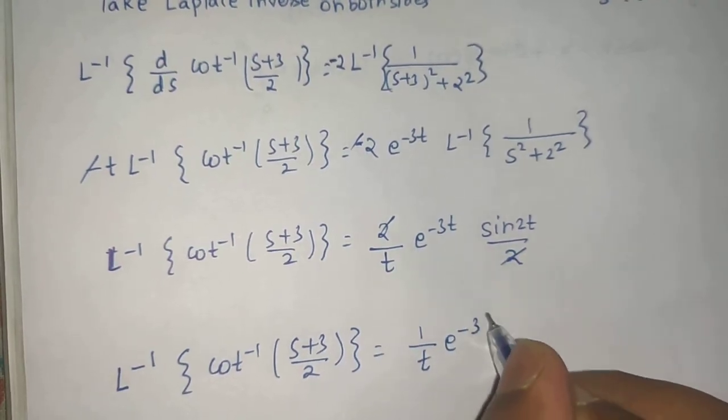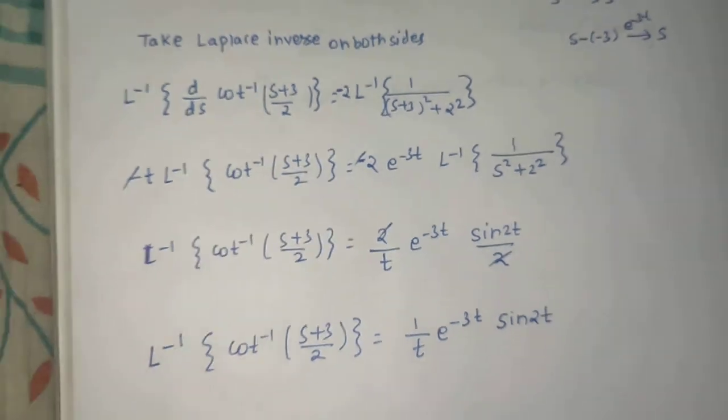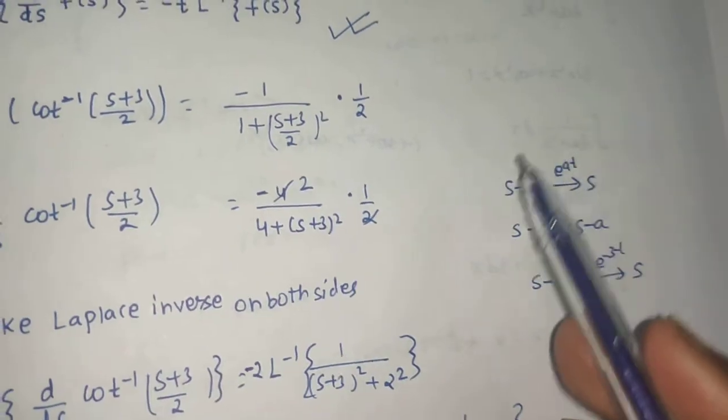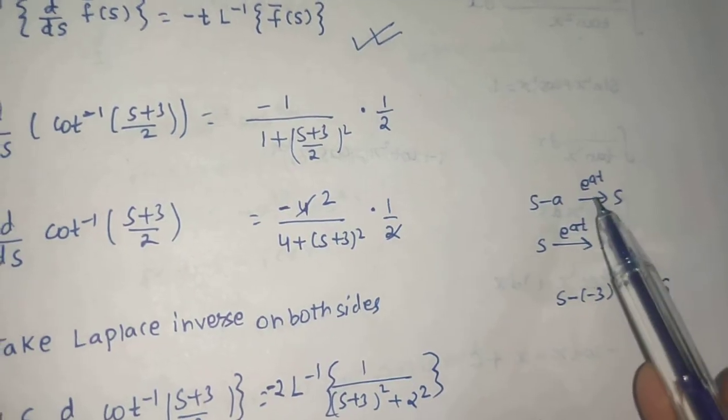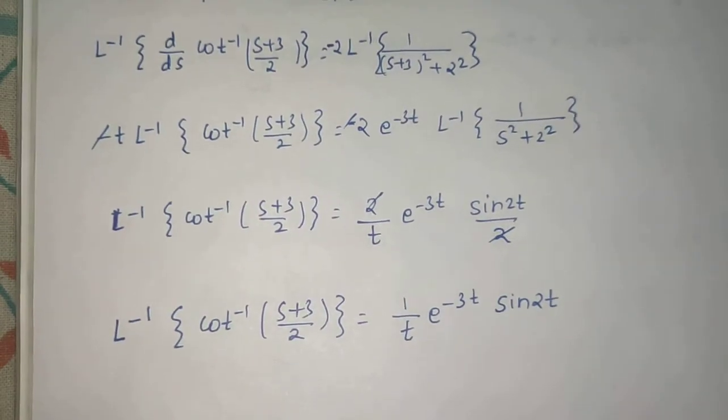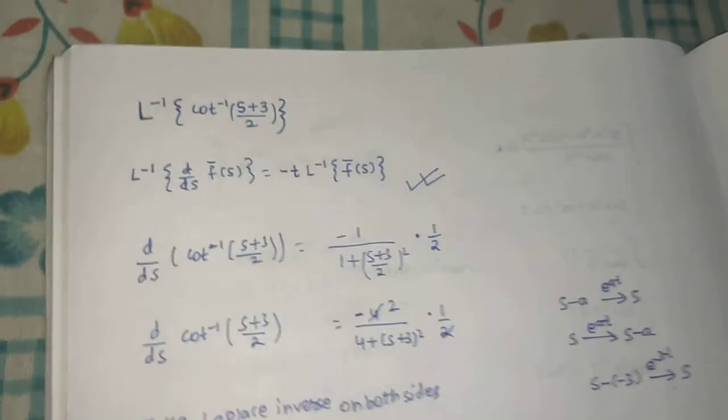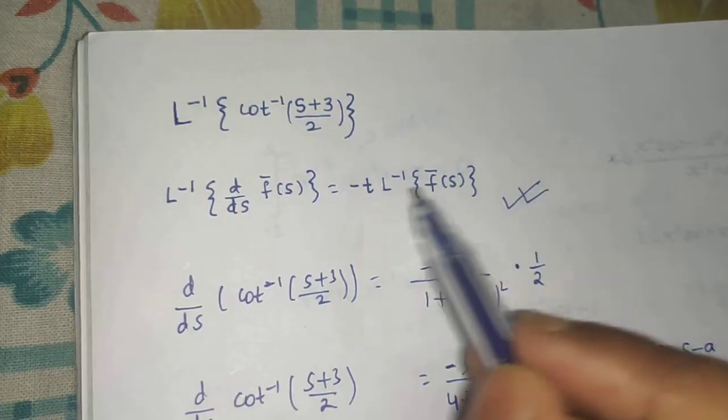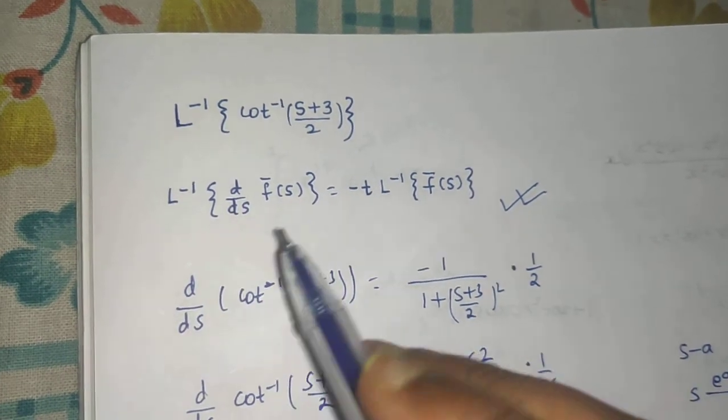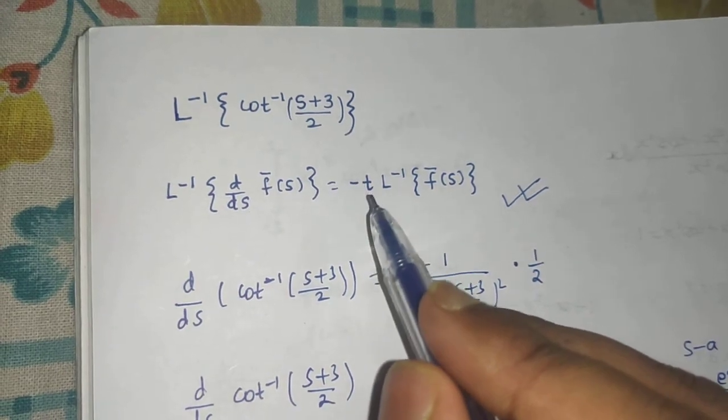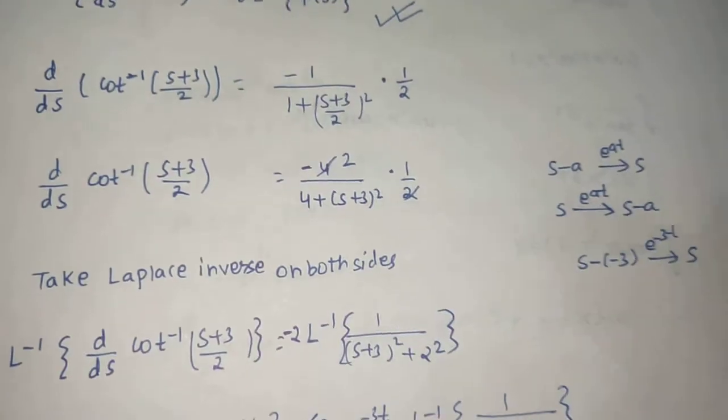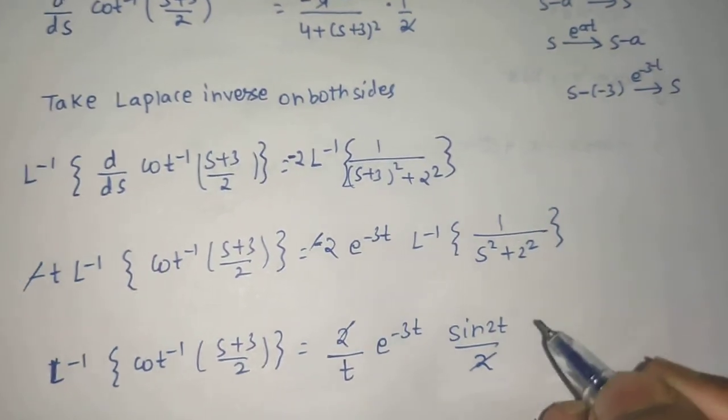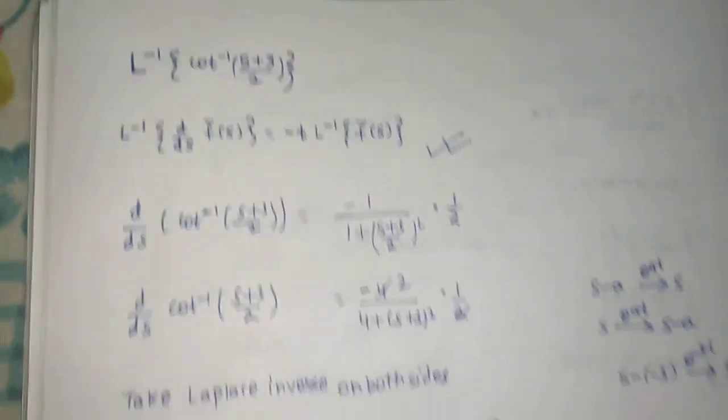To summarize, we used two main rules: the Laplace inverse of derivatives (multiply by -T for first derivative, T^2 for second, etc.), and the first shift rule (shifting from S-A to S means multiplying by e^(At)). We also used the basic formula L^(-1){1/(S^2 + A^2)} = sin(At)/A. I hope you enjoyed this question. Thanks and have a nice day!